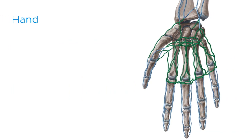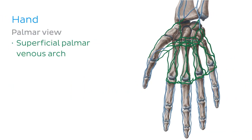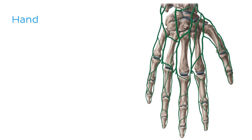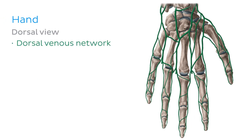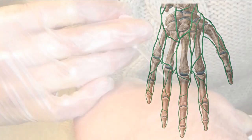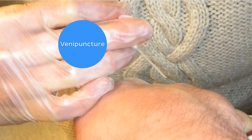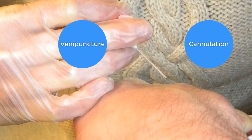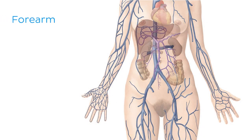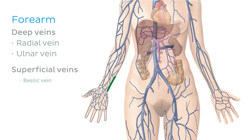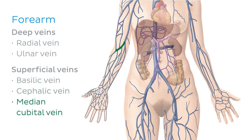In the hand, the palmar view shows the superficial palmar venous arch — receiving blood from the common digital veins — and the deep palmar venous arch, receiving blood from the palmar metacarpal veins. The dorsal venous network, visible on the back of the hand, is an excellent site for venipuncture and cannulation. In the forearm, the deep veins are the radial and ulnar veins, while the superficial veins are the basilic and cephalic veins, connected by the median cubital vein in the anterior cubital fossa — another good site for venipuncture.